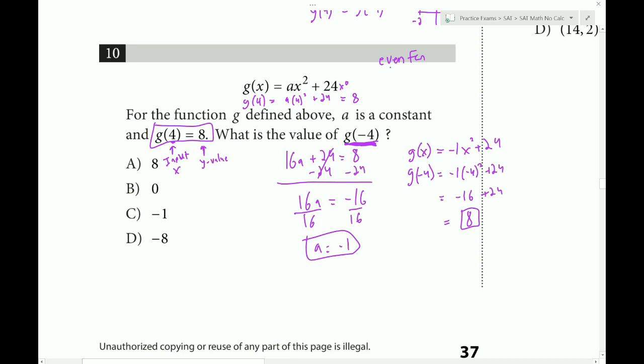So if we recognize that initially, then we would have been able to skip all this work and immediately conclude that whatever the value of G of 4 is, G of negative 4 would have the same output. And we could have then immediately chose choice A. So a little shortcut there.